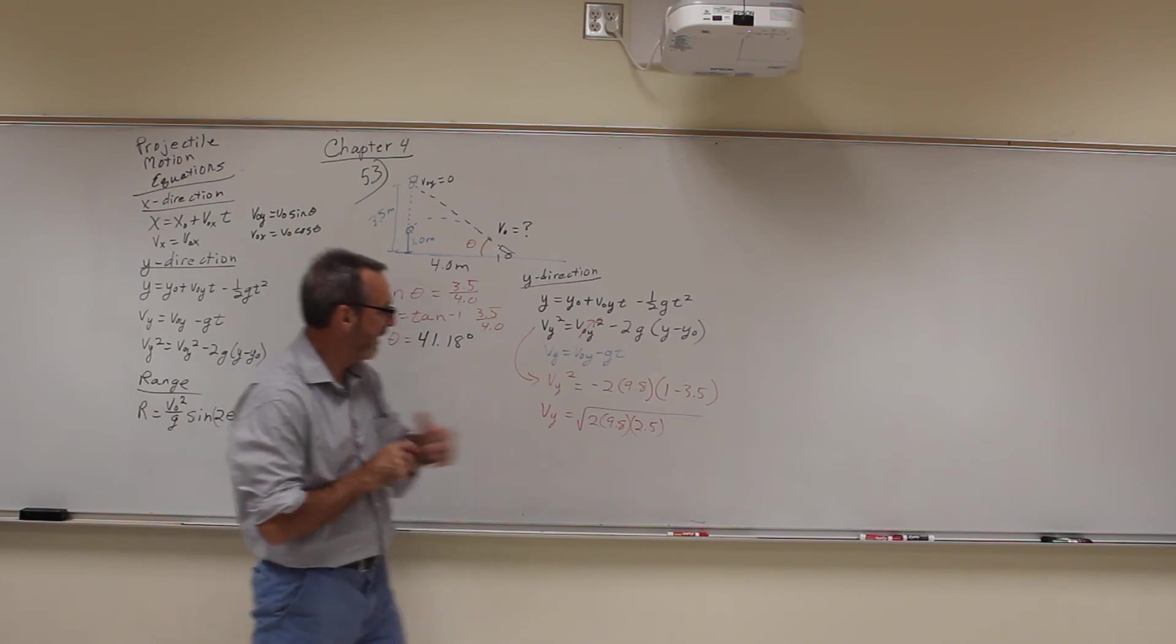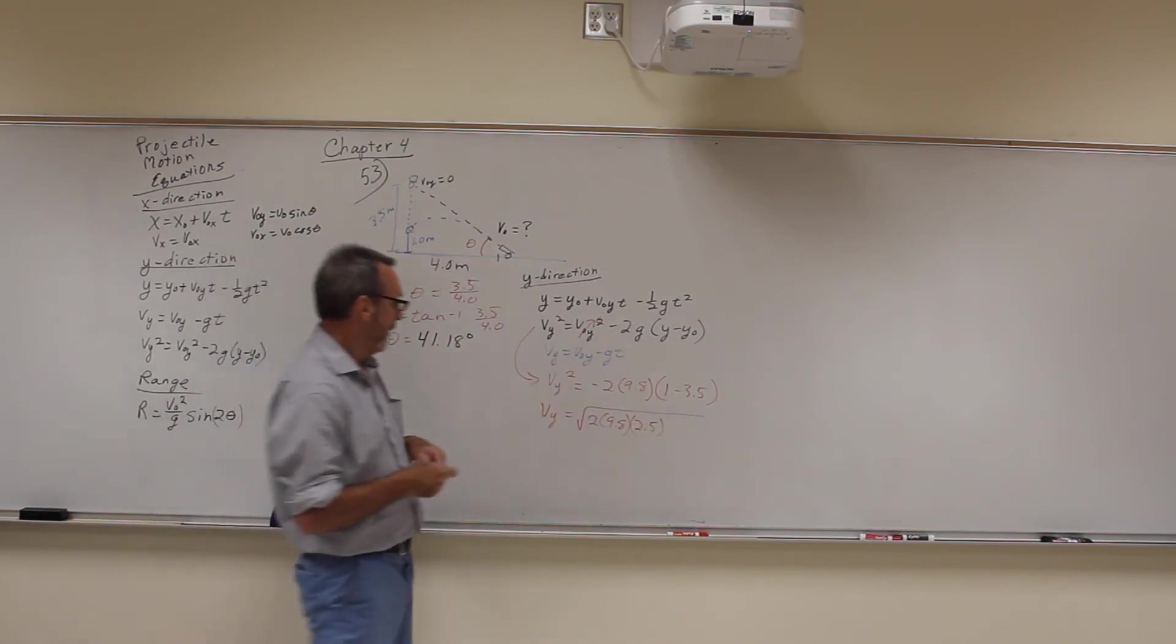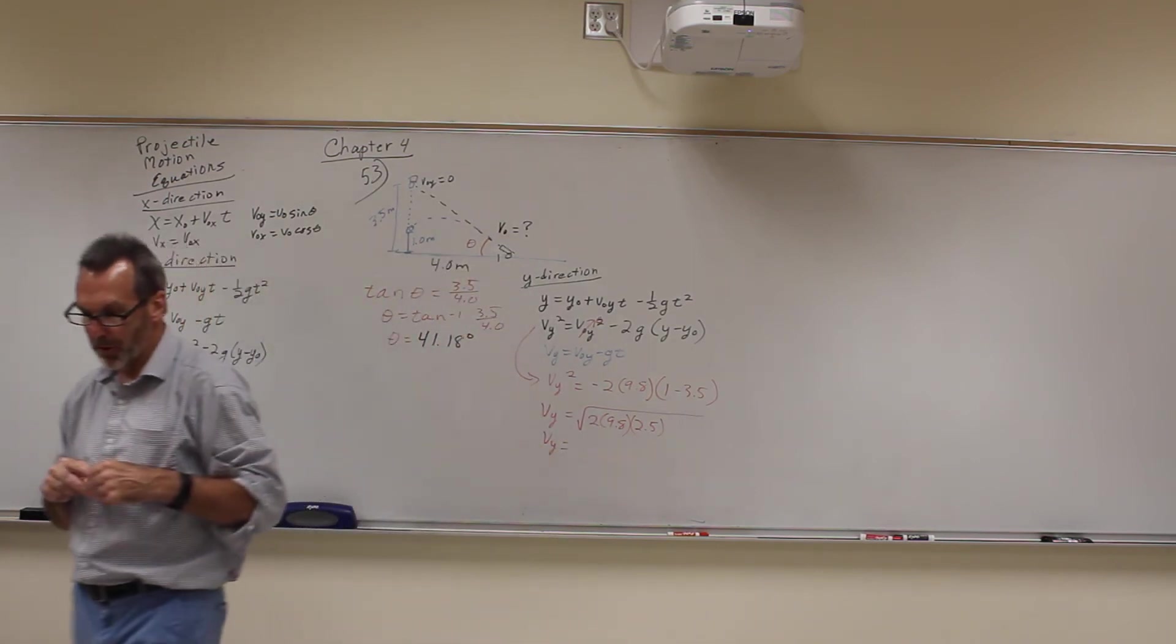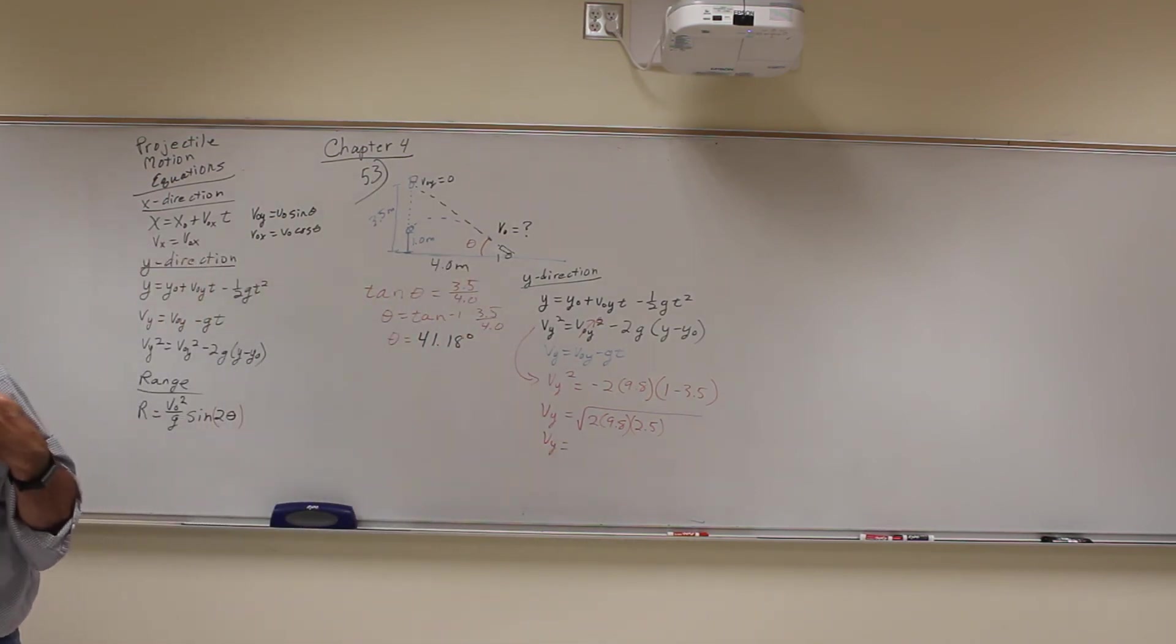If you like this with negative, yeah I got rid of the negatives here. Alright, when I do that I get Vy, or the velocity of the ball that's falling at that time is, let me calculate it here.